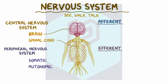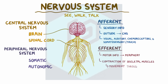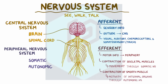The afferent division brings sensory information from the outside into the central nervous system, and includes visual receptors, auditory receptors, chemoreceptors, and somatosensory or touch receptors. The efferent division brings motor information from the central nervous system to the periphery, ultimately resulting in contraction of skeletal muscles to trigger movement through the somatic nervous system, as well as contraction of smooth muscles to trigger activity of the internal organs through the autonomic nervous system.